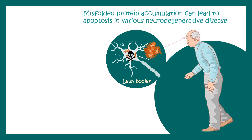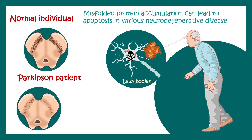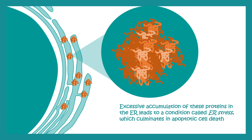Apoptosis can also be caused by accumulation of misfolded proteins, a theme very common in neurodegenerative diseases like Parkinson's and Alzheimer's. In Parkinson's disease, Lewy bodies — aggregated proteins — accumulate in specific dopaminergic neurons in the substantia nigra, and these neurons die. Accumulation of too many aggregates in the endoplasmic reticulum causes ER stress, which ultimately activates apoptotic programs, killing the cell.